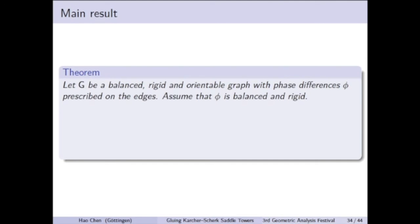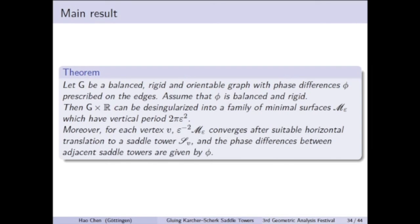We are finally ready to announce our main result. For the gluing construction to succeed, we need the graph and the prescribed phase functions to be both balanced and rigid. Then the graph times R can be desingularized into a minimal surface. But this time, the phase differences in the degenerate limit are given by the prescribing function φ. In particular, if φ is not zero or π on every half h, then the resulting surfaces do not have any horizontal reflection plane.